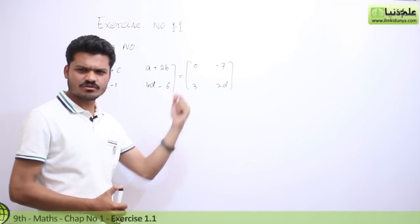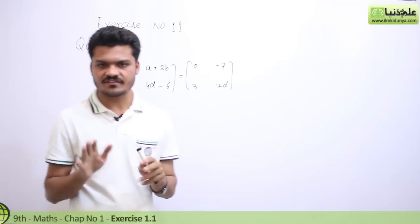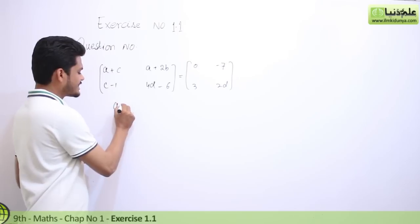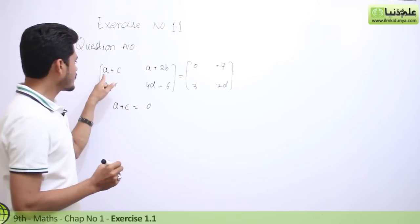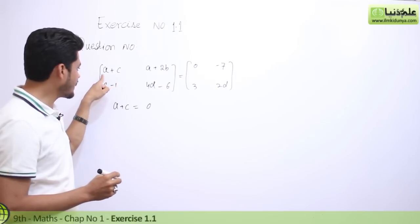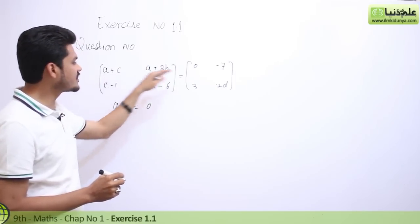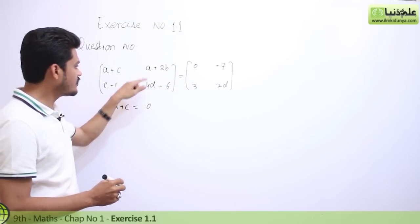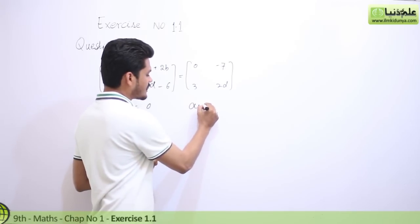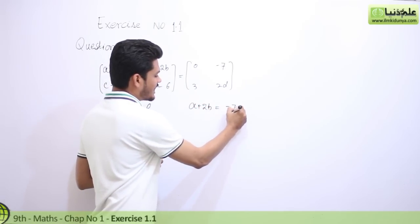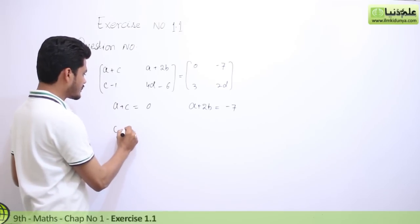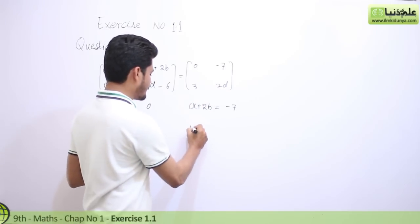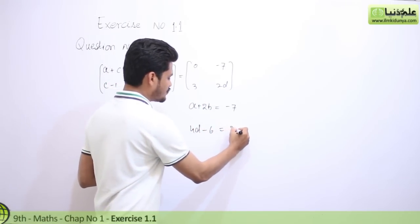According to the definition, these two matrices are equal, so we can write the corresponding entries as equations: A plus C equals 0 (equation 1), A plus 2B equals minus 7 (equation 2), C minus 1 equals 3 (equation 3), 4D minus 6 equals 2 (equation 4), and D equals D.